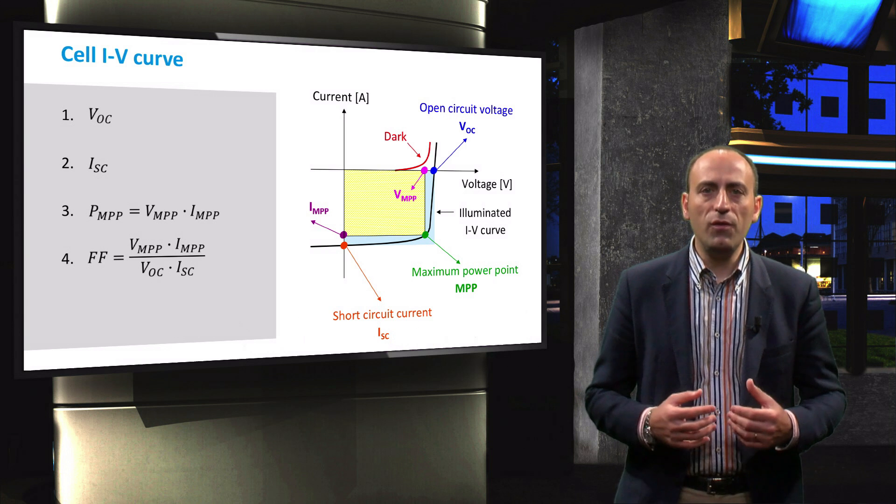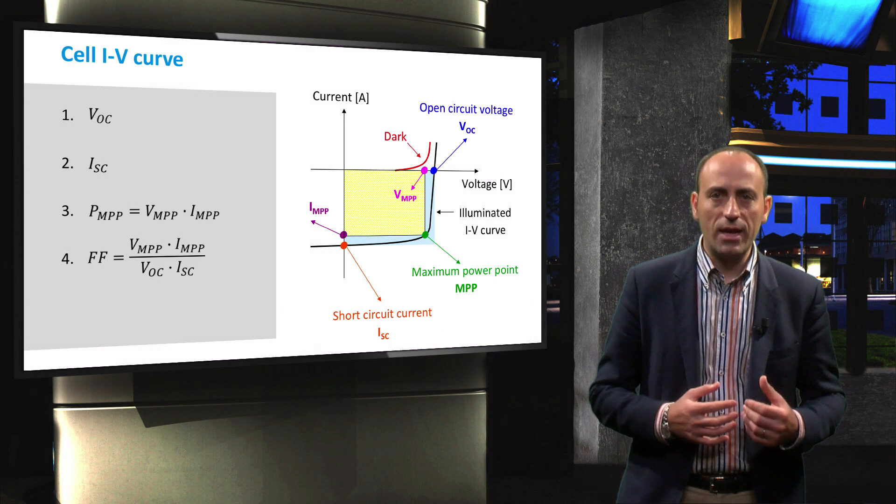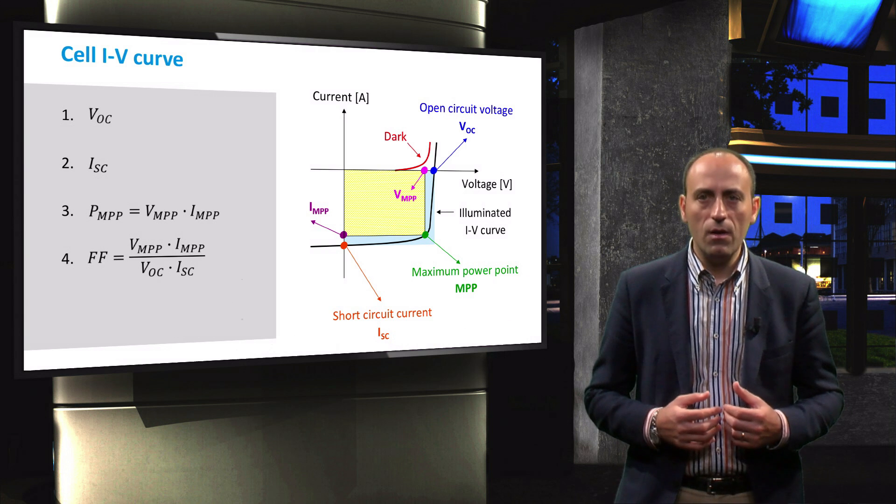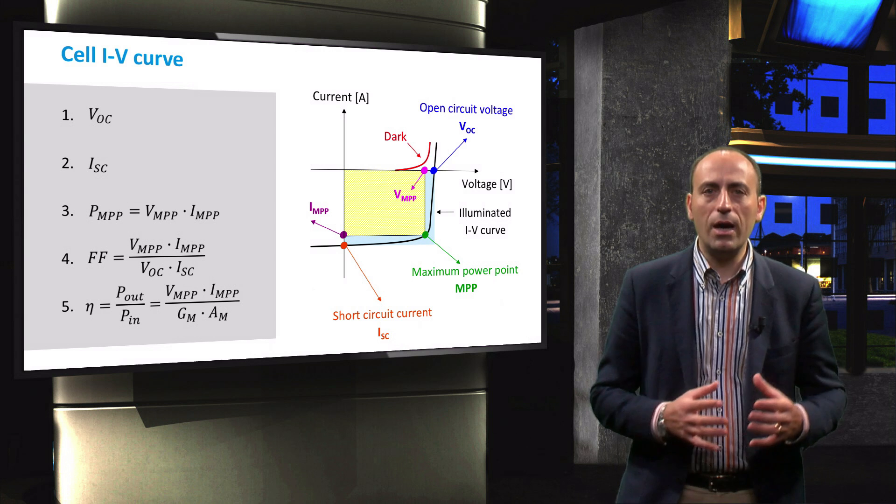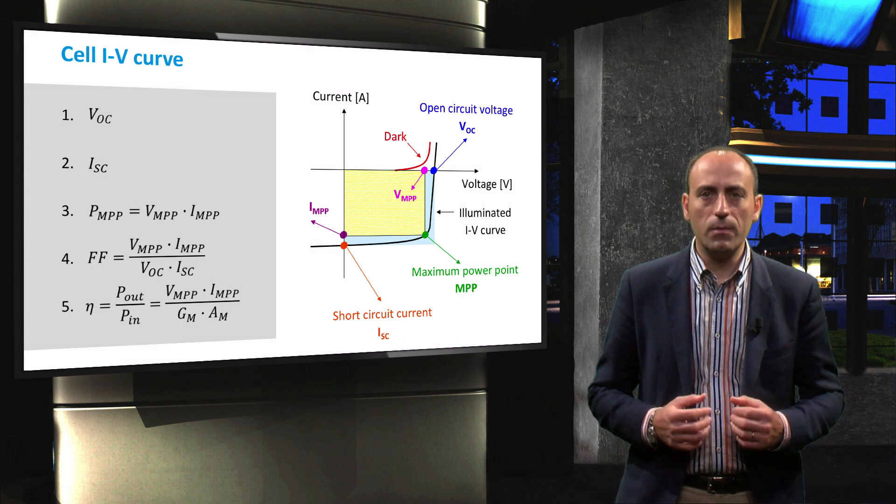Graphically, the fill factor is equal to the ratio between the yellow dashed area and the blue area. Finally, the efficiency of a solar cell is equal to the ratio between the output and input power.